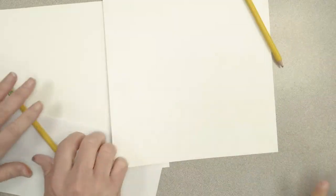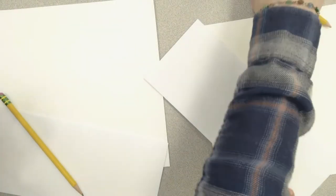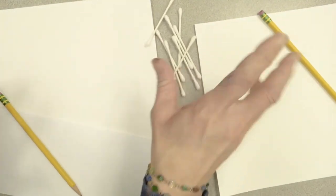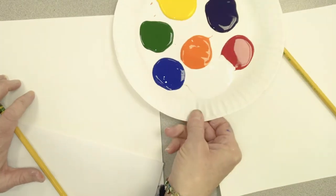That's what we can use to run our pencil along and it works the same way as a ruler. So we have a pencil. We have our straight edge ruler. We have Q-tips that we'll use for the pointillism technique. And we have a plate of paint.